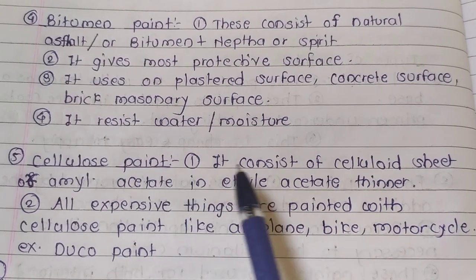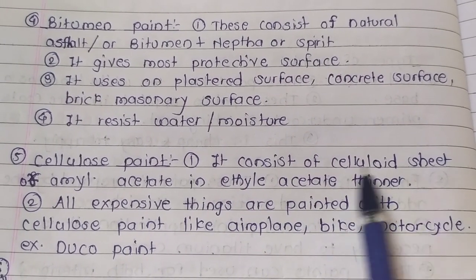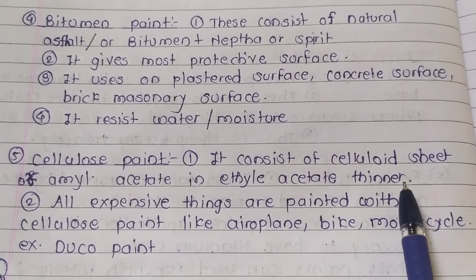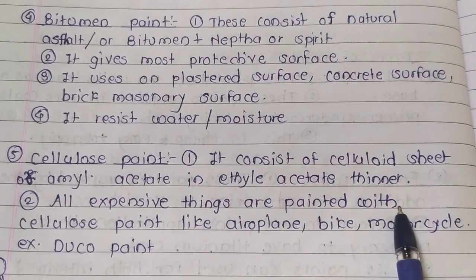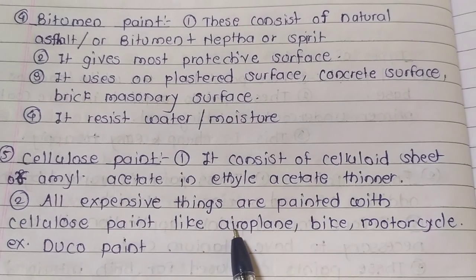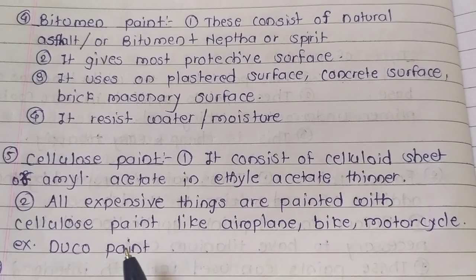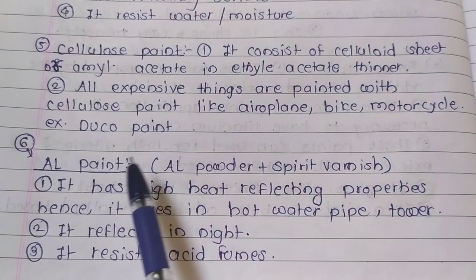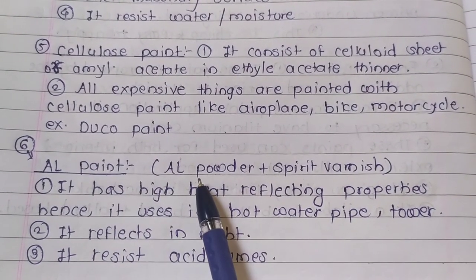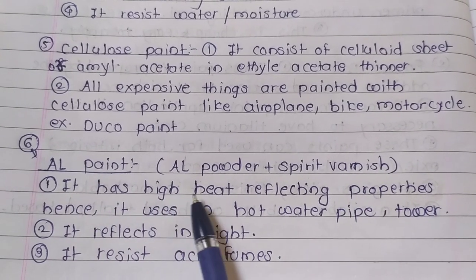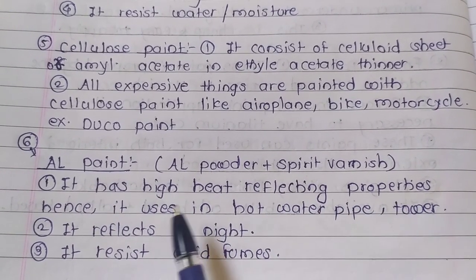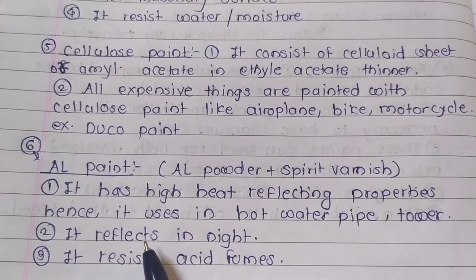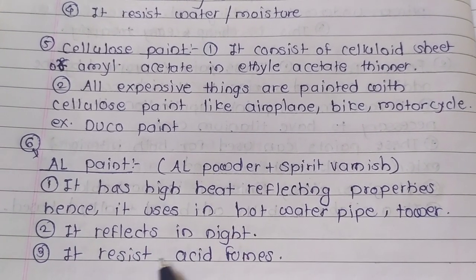Cellulose paint consists of cellulose nitrate or amyl acetate in ethyl acetate thinner. All expensive items are painted with cellulose paint, like aeroplanes, bikes, and motorcycles — for example, Duco paint. Aluminium powder paint is made of aluminium powder plus spirit varnish. It has high heat reflecting properties, hence it is used on hot water pipes and towels. It reflects at night and resists acid fumes.